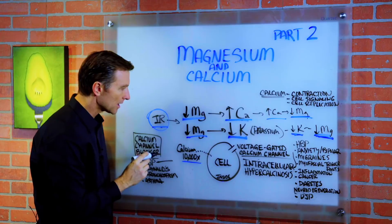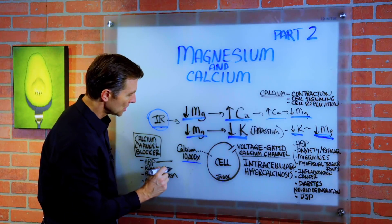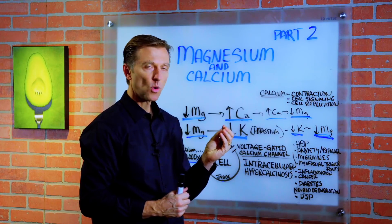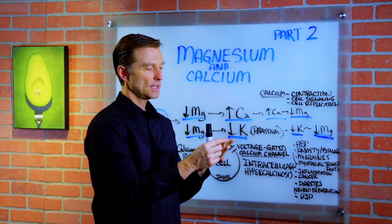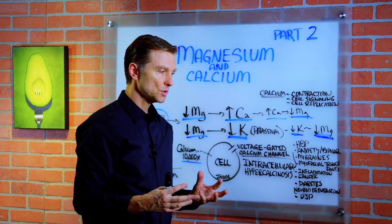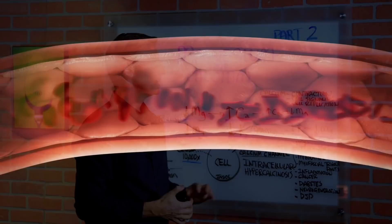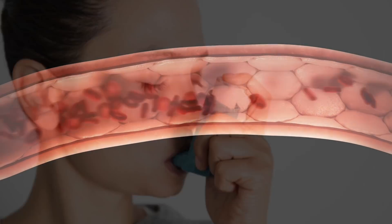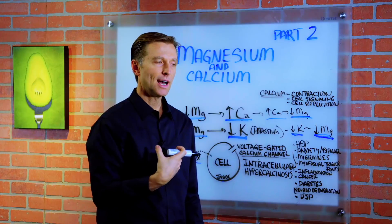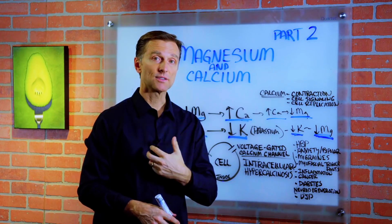Calcium channel blockers are used to reduce blood pressure by blocking that channel. They're also used for a condition called Raynaud's, where circulation at the end of the fingertips is very poor — you get an almost purple color because the smooth muscle is restricting blood flow, especially in the cold. Calcium channel blockers improve that by inhibiting contraction and increasing blood flow. They're also used for bronchospasm or asthma, simply because they inhibit contraction in the smooth muscle of the lungs, allowing you to breathe better.